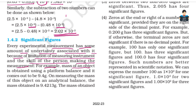For example, the mass of an object is obtained using a platform balance and it comes out to be 9.4 grams. On measuring the mass of this object on an analytical balance, the mass obtained is 9.4213 grams.